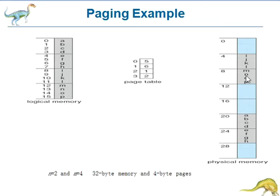Paging itself is a form of dynamic relocation. Every logical address is bound by the paging hardware to some physical address. When we use a paging scheme, there is no external fragmentation. Any free frame can be allocated to a process that needs it.